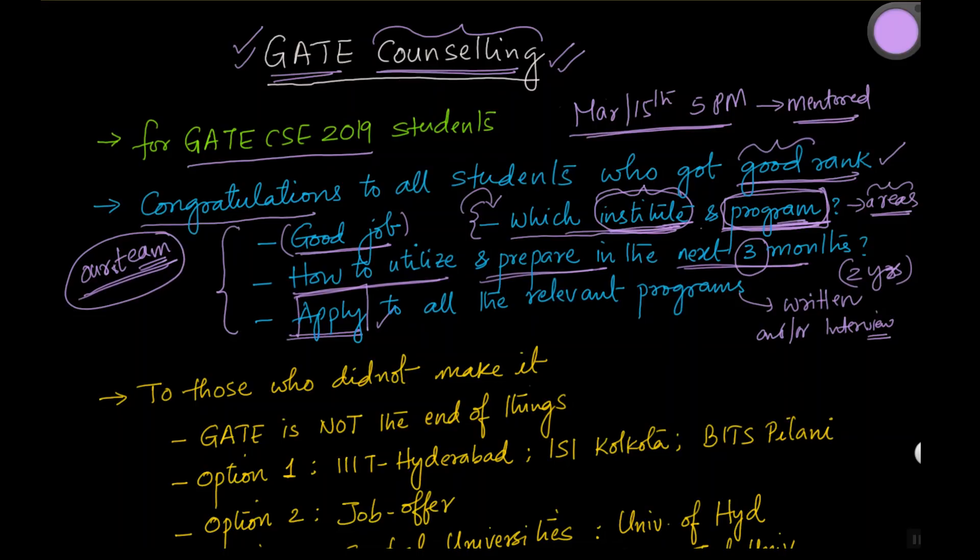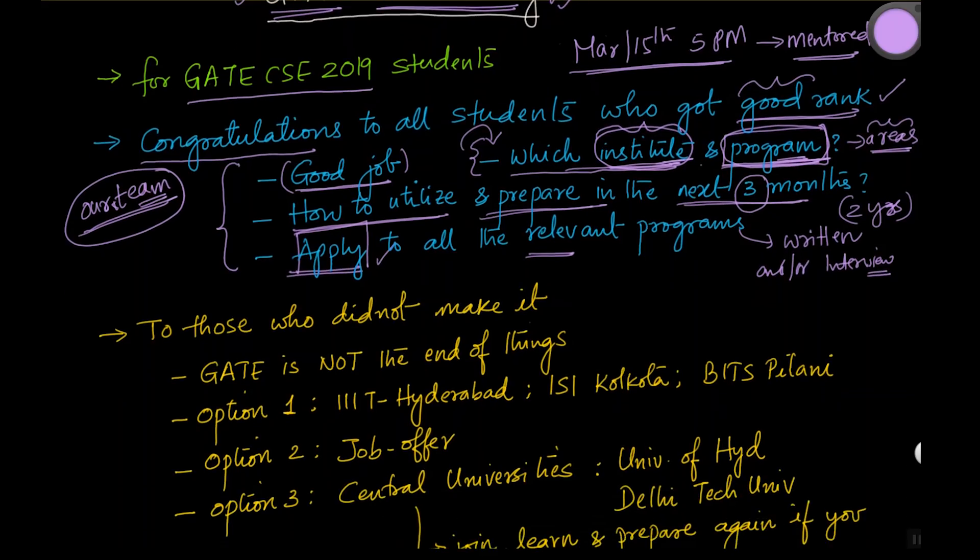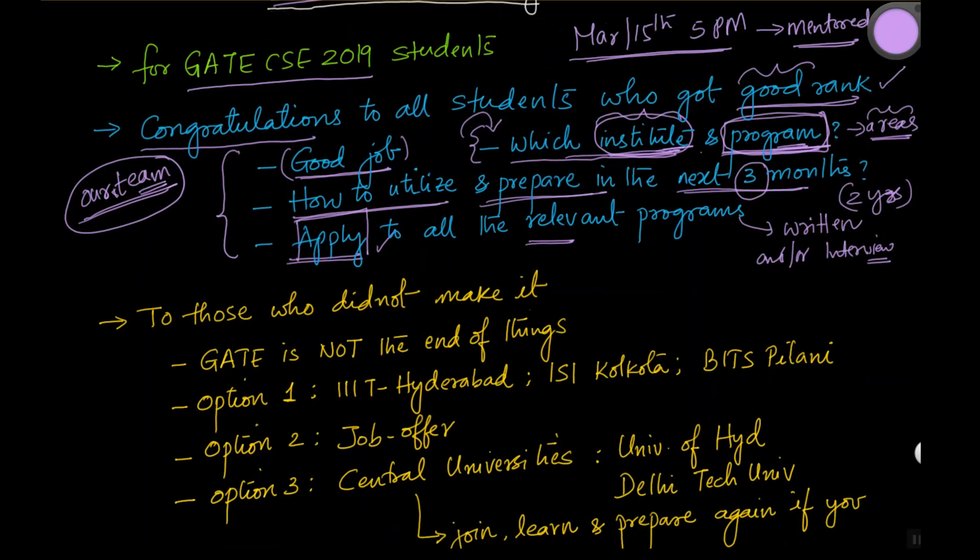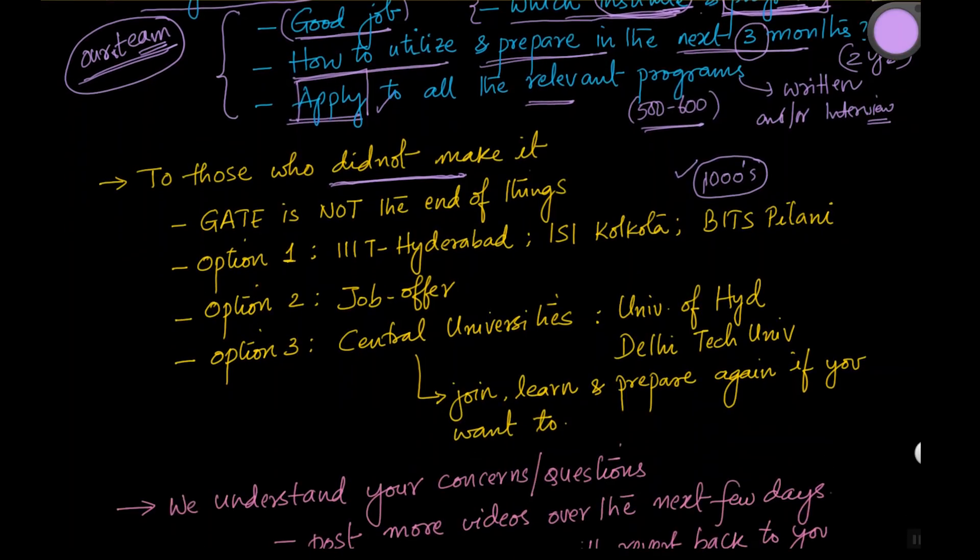Now, let's be honest here. I think except for the top 500 or so 500 or 600 students, many of them, if there are hundreds of students who are happy with the results, there are thousands of students who are unhappy with them. It is our moral obligation to help these students also. Those who did not make it will be in far more confusion than those who have made it. So there are multiple options here. Number one is, please remember that gate is not the end of things.